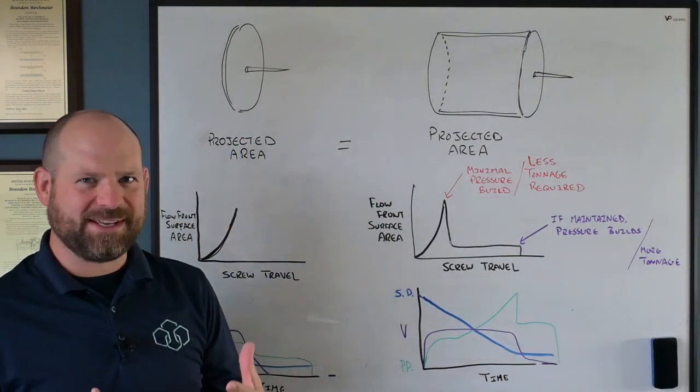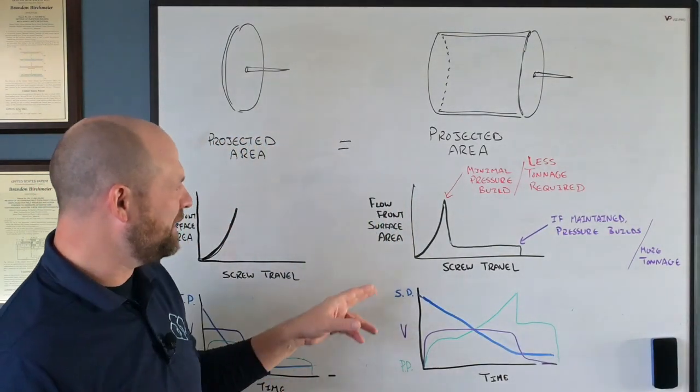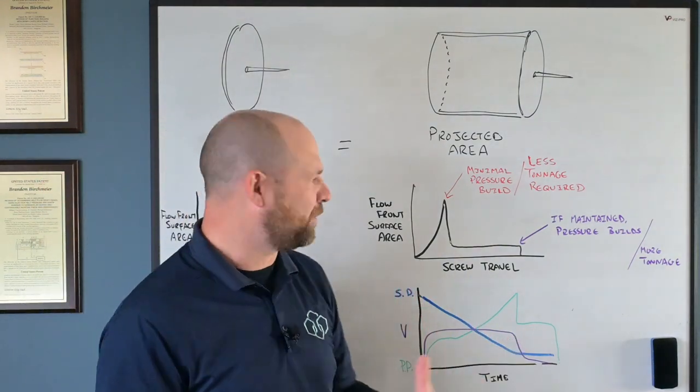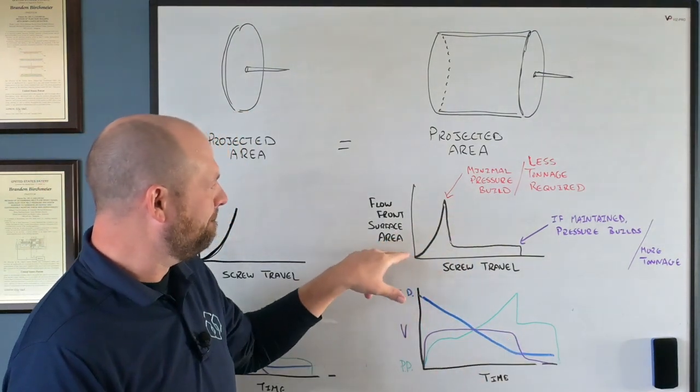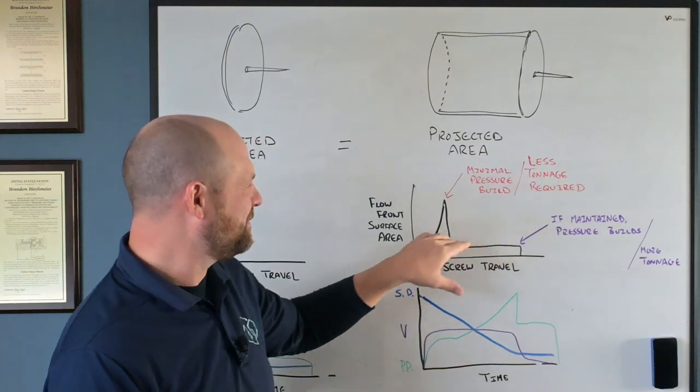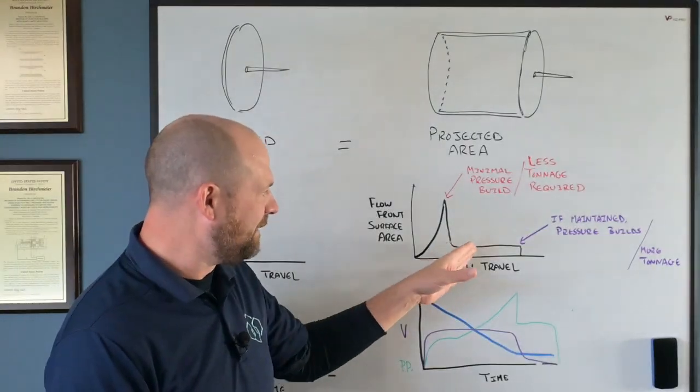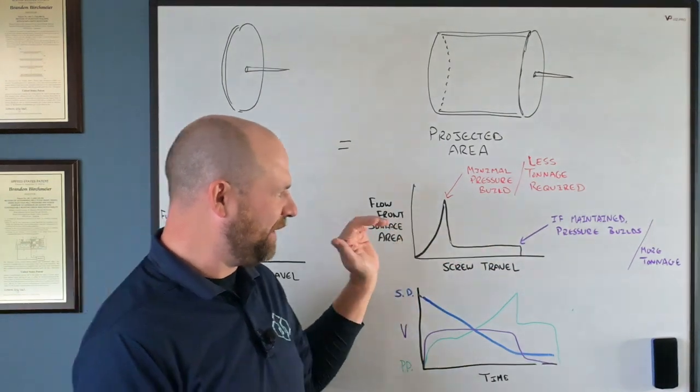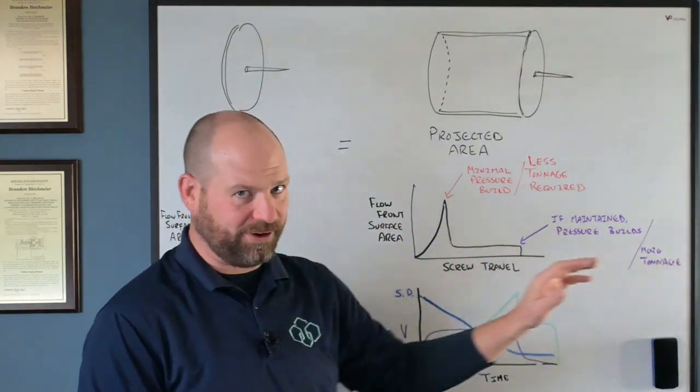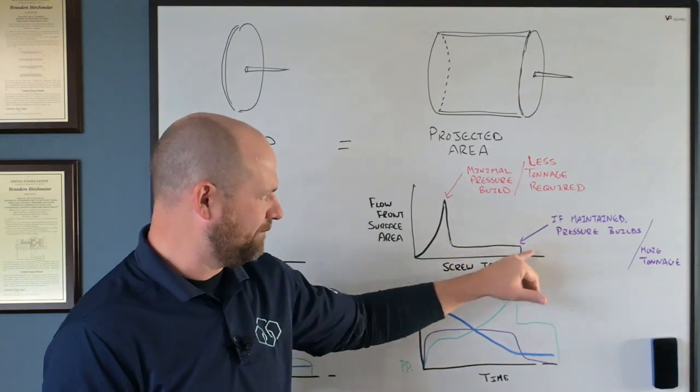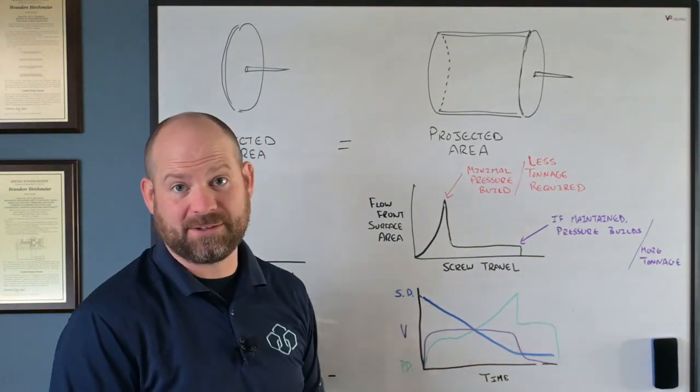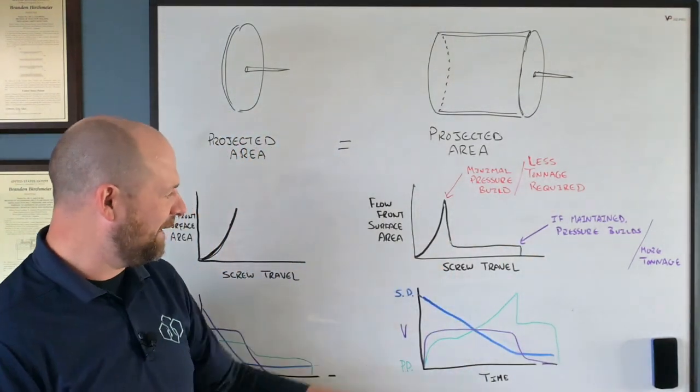Two relationships I like to look at: if I'm building minimal pressure, I'm going to have less tonnage requirements, right? During this first phase, I don't expect to build a lot of pressure. However, as I'm maintaining that surface area and continuing to move the flow front forward in this pattern, I can expect to create pressure.